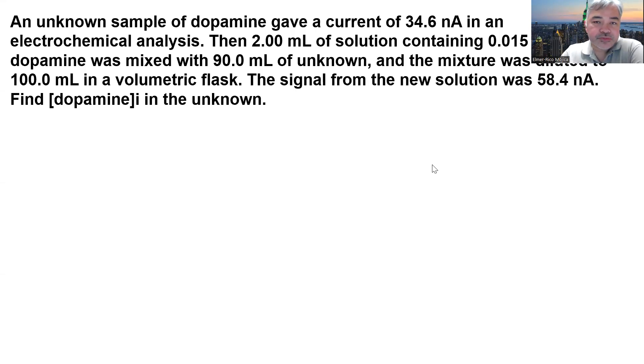An unknown sample of dopamine gave a current of 34.6 nA in an electrochemical analysis. Then 2 mL of solution containing 0.0156 molar dopamine was mixed with 90 mL of unknown, and the mixture was diluted to 100 mL in a volumetric flask. The signal from the new solution was 58.4 nA. We need to find the dopamine concentration initially present in the unknown.